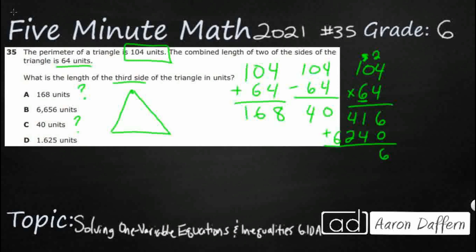So 6 times 4 is 24. Carry that 2. 6 times 0 is 0. Add that 2 back in as 2. 6 times 1 is 6. That wasn't too bad. So we've got 6,656. Guess what? Maybe the answer is B.